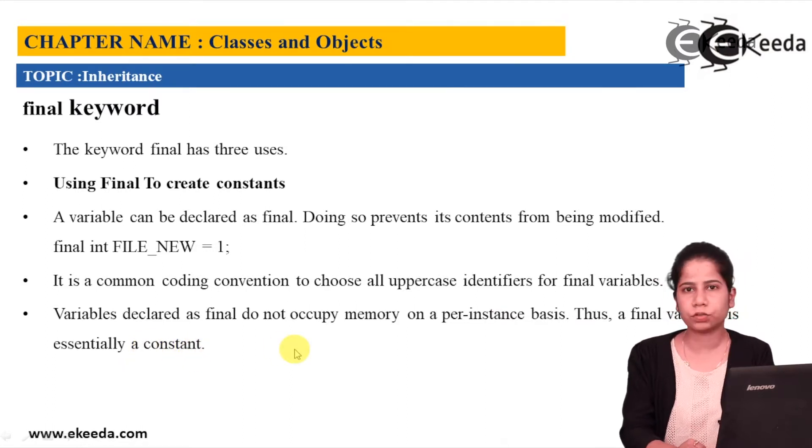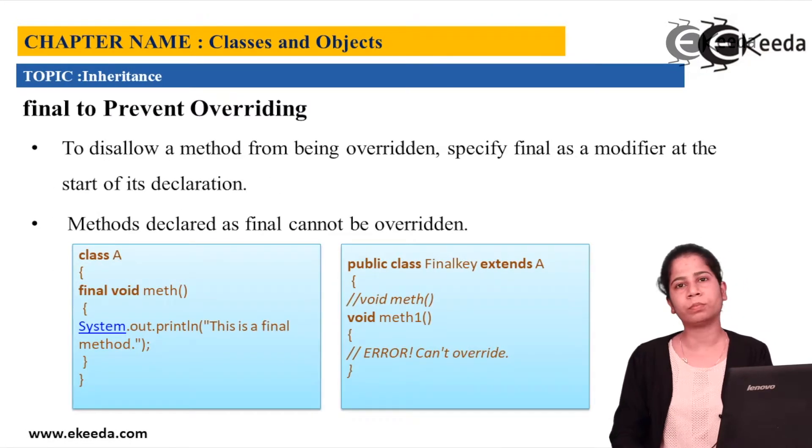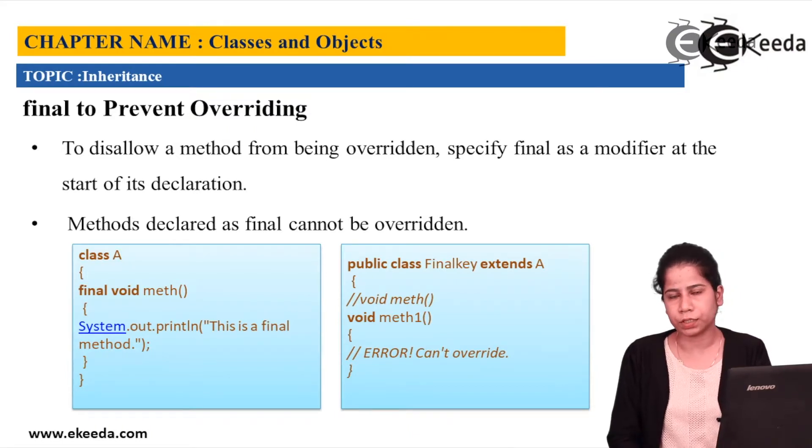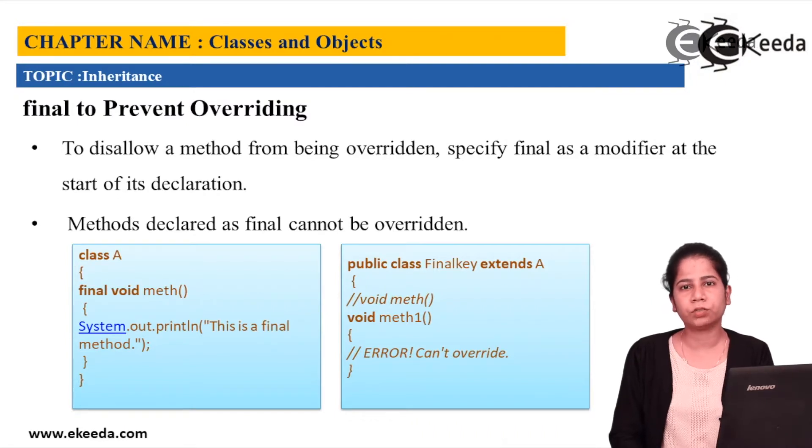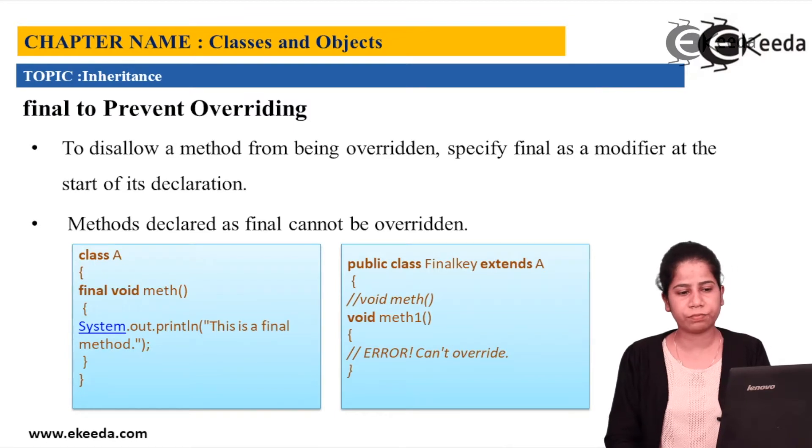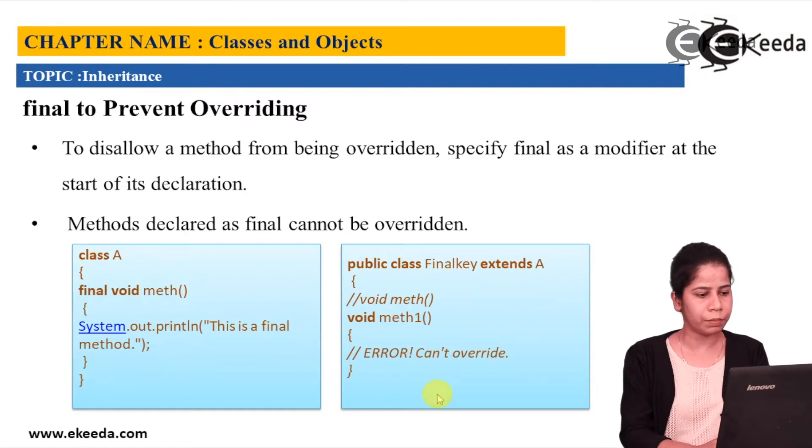So this is the first use of a final variable. Next, final variable on methods. We have seen it on variable, now methods. So final if I'm using for a particular method, then that method you cannot override. To disallow a method from being overridden, then you have to specify final as a modifier at the start of its declaration. So method declared as final cannot be overridden.